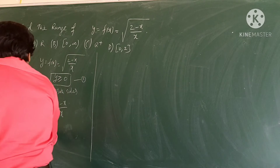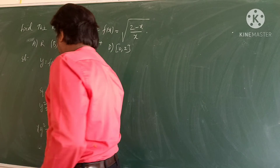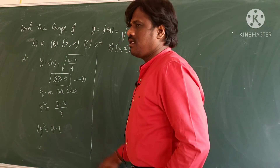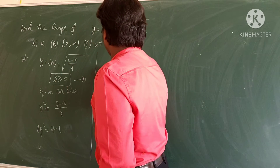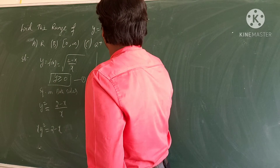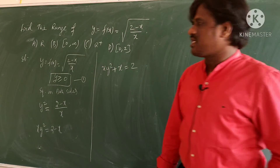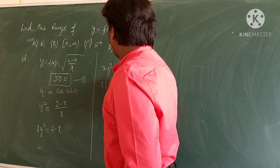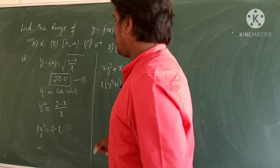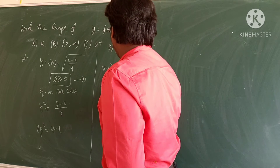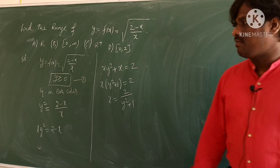Cross multiplying: x·y² = 2 - x, so x·y² + x = 2. Taking x as common: x(y² + 1) = 2, therefore x = 2/(y² + 1).